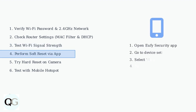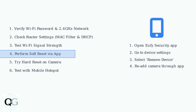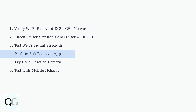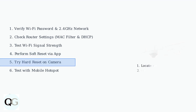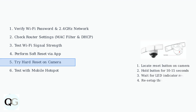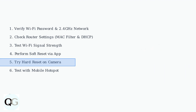If network settings are correct, try a soft reset first. Open the Eufy security app, go to device settings, and remove the device, then re-add it following the setup process. If the soft reset doesn't work, perform a hard reset by locating the reset button on your camera and holding it for 10 to 15 seconds while the camera is powered on.